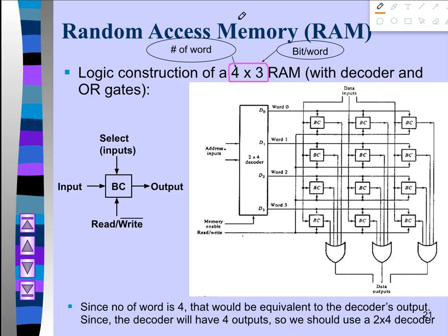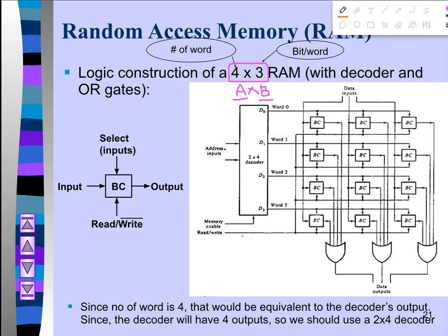If this type of question is given in your exam, you first have to understand what 4x3 means. Just like in previous tutorials, if you see something in the format A into B, the left part is the number of words and the right part is bits per word. So 4x3 means there are four words and three bits per word.